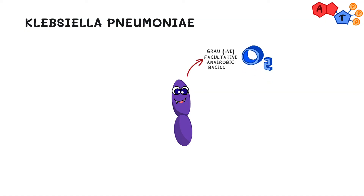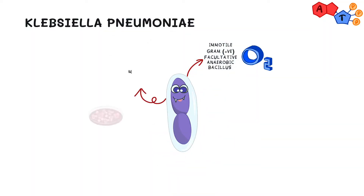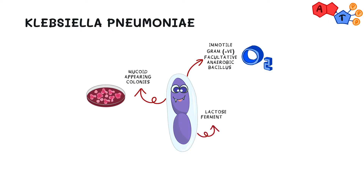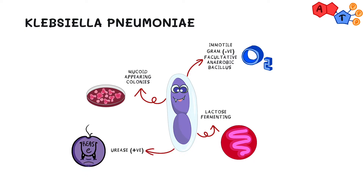Klebsiella pneumoniae is a gram-negative facultative anaerobic bacillus that is part of the normal GI flora. It is immotile and has a very large polysaccharide capsule, which gives its colonies a striking mucoid appearance. It is a lactose-fermenting bacterium that stains pink on MacConkey's agar. It is also urease positive and is often resistant to antibiotic treatment.